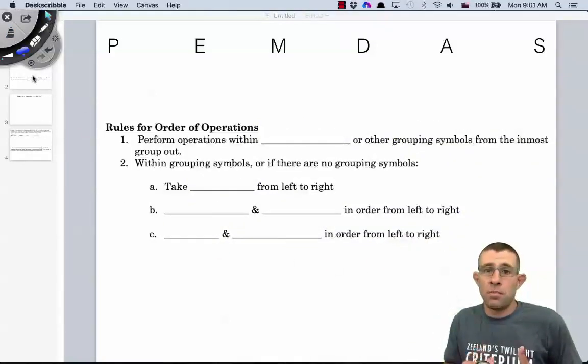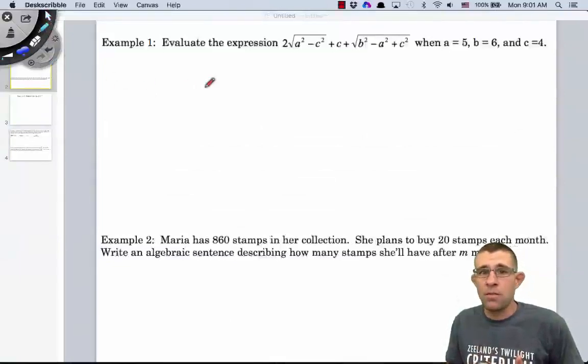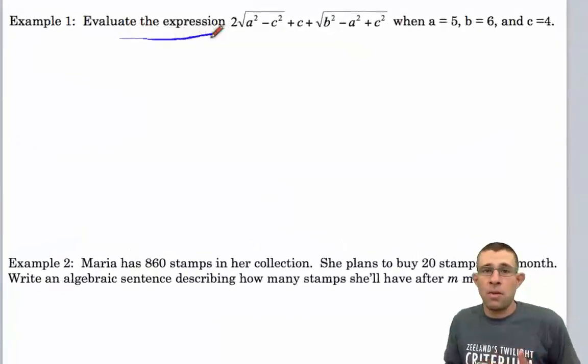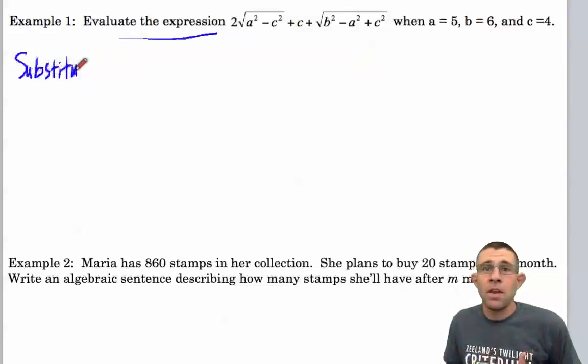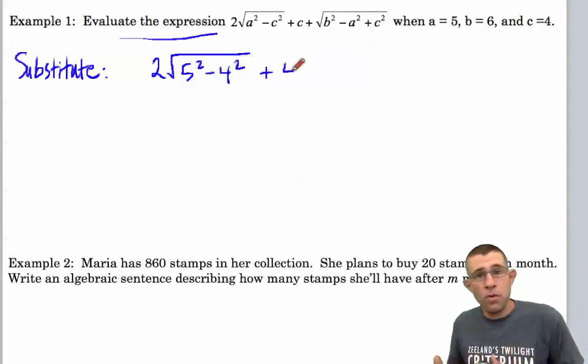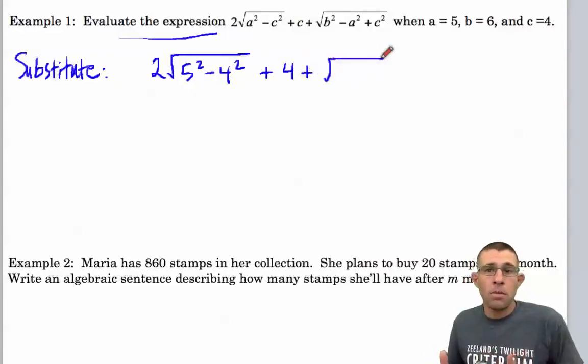Let's take a look at a few examples. In example one, we're asked to evaluate the expression. Now remember, an expression is simply a collection of numbers and variables. And we're going to start off by substituting the values of our variables in for those letters. So we have 2 times the square root of 5 squared minus 4 squared plus 4 plus the square root of 6 squared minus 5 squared plus 4 squared.